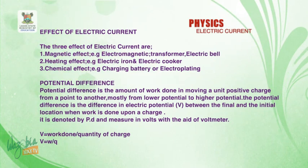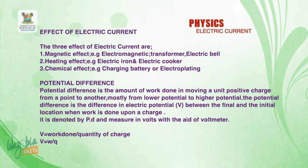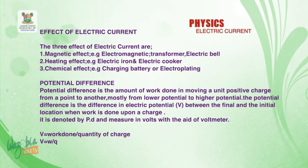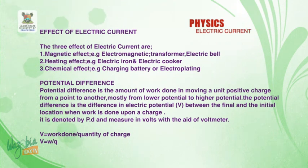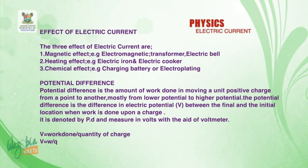All these three effects are common within our environment. Now, we want to look at potential difference. Potential difference is the amount of work done in moving a unit positive charge from one point to another — mostly from a lower potential to a higher potential. Potential difference is the difference in electric potential between the final and the initial location when work is done upon a charge. It is denoted by PD.